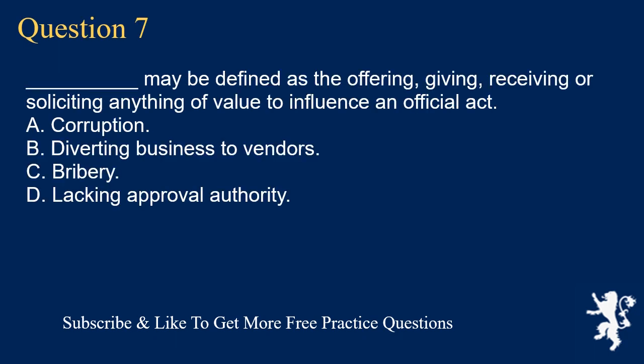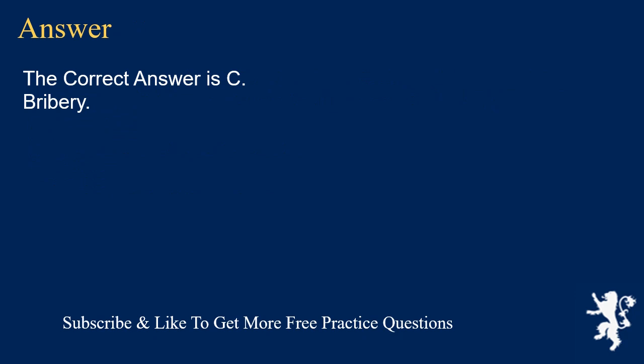Question 7: Underscore may be defined as the offering, giving, receiving, or soliciting anything of value to influence an official act. A. Corruption. B. Diverting business to vendors. C. Bribery. D. Lacking approval authority. The correct answer is C. Bribery.